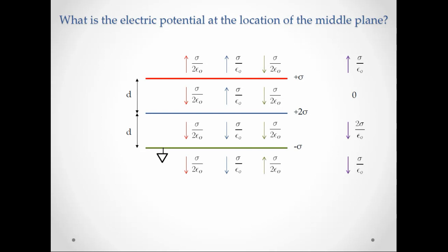And we notice that the very top has sigma over epsilon naught pointing up, followed by zero, followed by two sigma over epsilon naught pointing down, and followed by sigma over epsilon naught pointing down.